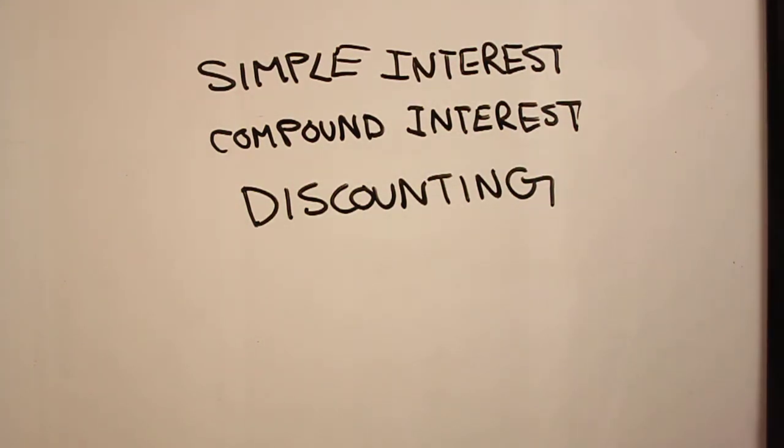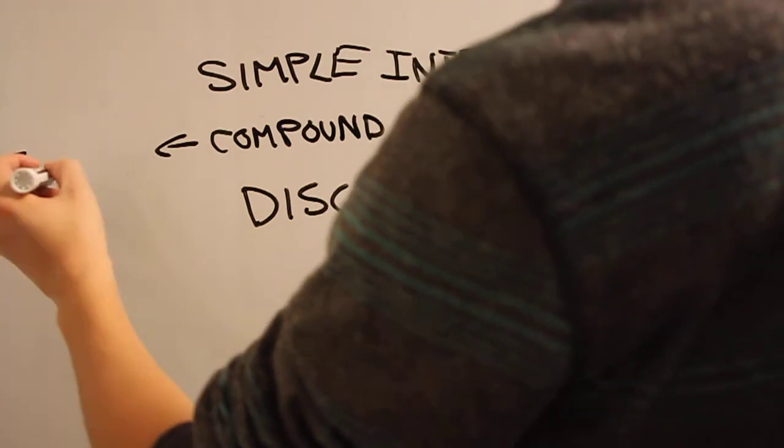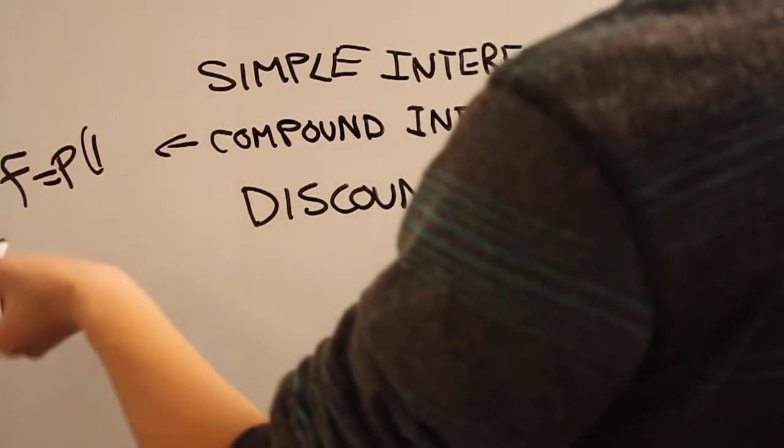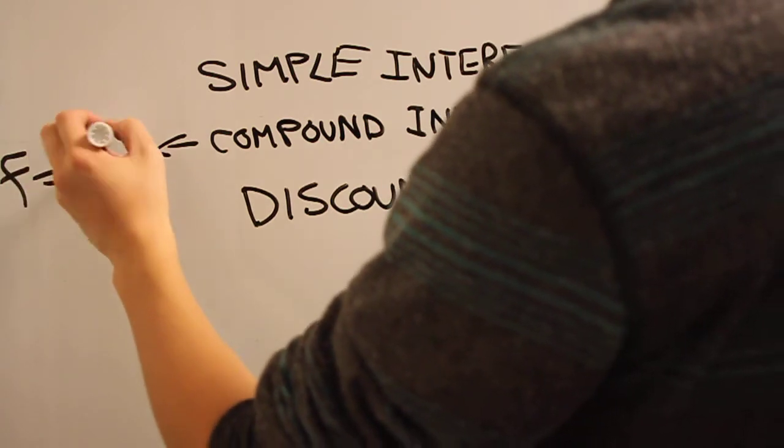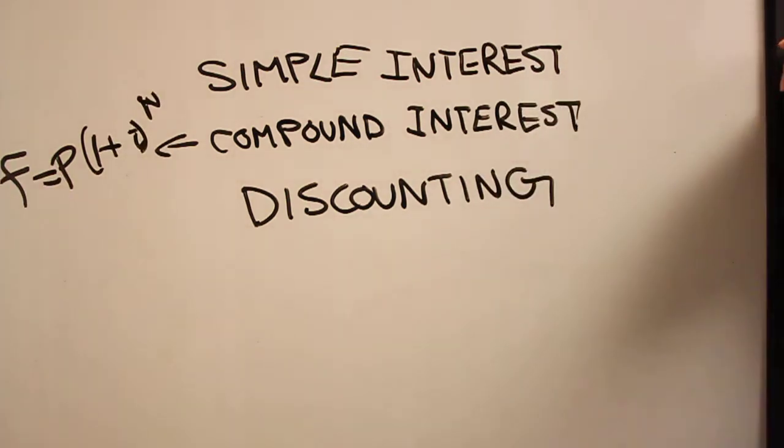We're going to look at three different examples of interest. From the last video, we looked at compound interest, from which we derived the formula: F, the final amount you have, is the initial amount you put in times 1 plus the interest rate to the nth power, where n is the period of time.